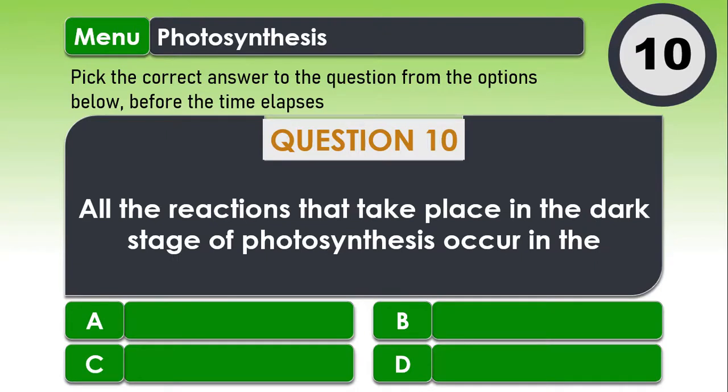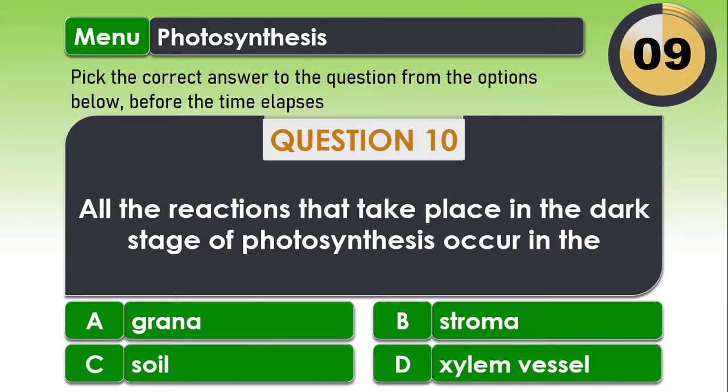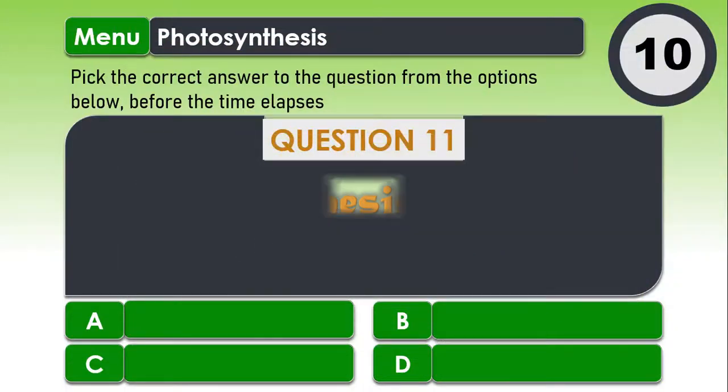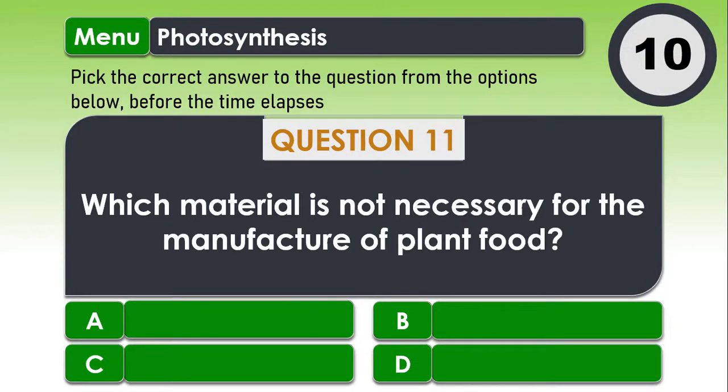Question 10. All the reactions that take place in the dark stage of photosynthesis occur in the A. Grana B. Stroma C. Soil and D. Xylem. The correct answer is B. Stroma. It's now your turn. Provide the answers to questions 11 to 15 in the comment section and good luck.